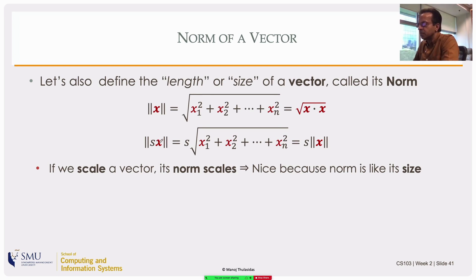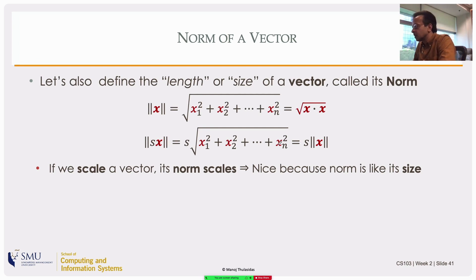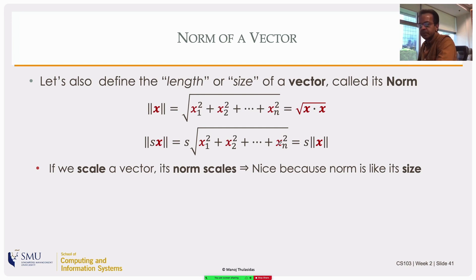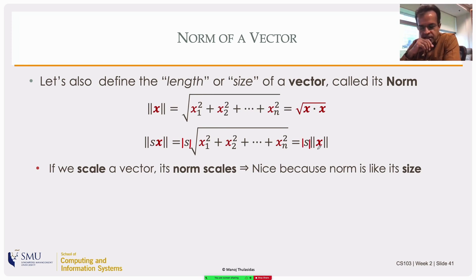One thing to note is that if you scale a vector, you would like the length to scale by the same amount — and that does happen here. If you multiply a vector by scalar s, every element gets multiplied by s, every term inside the square root gets s², which comes out as s, so the norm of a scaled vector is s times the original norm. We're talking only about the positive square root, so even though it scales, it's not actually a linear function — negative scalars get mapped to positive numbers.